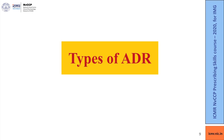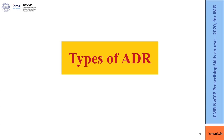There are several types of ADRs defined as type A through F. However, in this module we will primarily talk about two types: type A and type B. Type A reactions are augmented and dose-dependent, while type B reactions, also known as bizarre or idiosyncratic reactions, are unpredictable. Now let us try to understand these common types with the help of a case study.